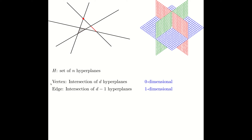If we have n hyperplanes, we can identify the following set of objects created by these hyperplanes. The intersection of d hyperplanes defines a vertex. So in 2D, a vertex is the intersection of two lines. In three dimensions, a vertex is the intersection of three planes, and so on. Notice that a vertex is a zero-dimensional object. Next, we can define an edge. The intersection of d-1 hyperplanes defines an edge. In 3D, the intersection of two hyperplanes defines one edge.